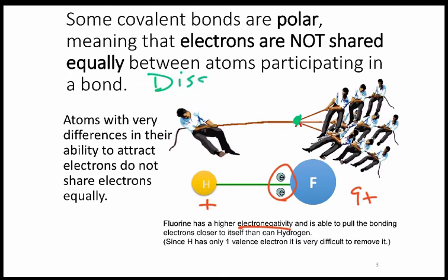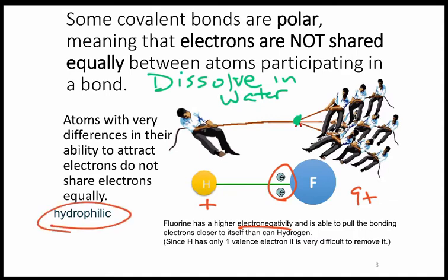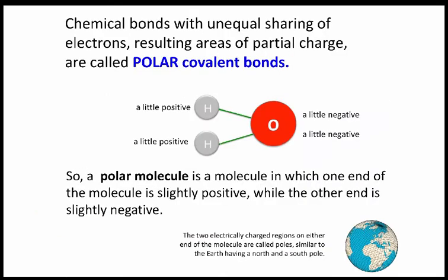Polar covalent bonds, any molecule with polar covalent bonds dissolves in water. Because water, it turns out, is polar. And they're called hydrophilic. Hydrophilic means water loving. Philia means love.